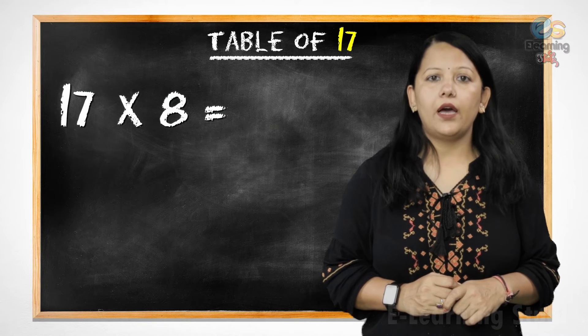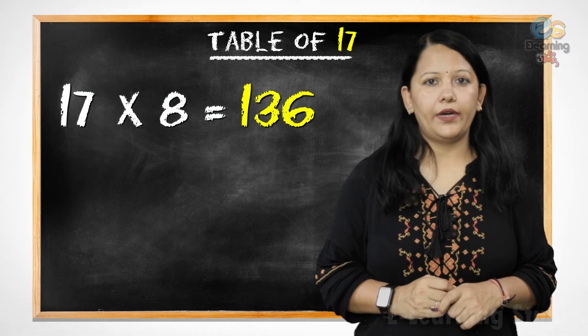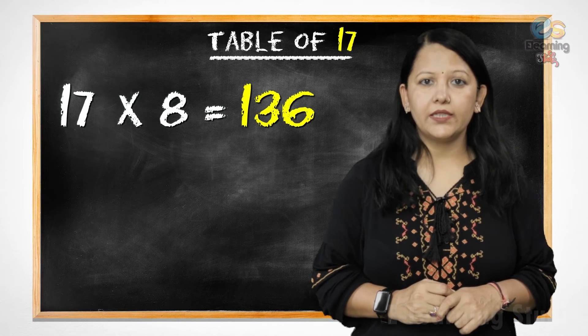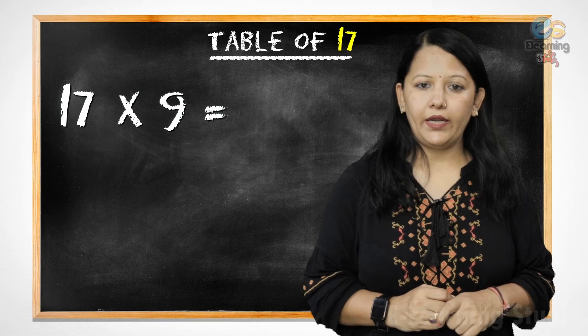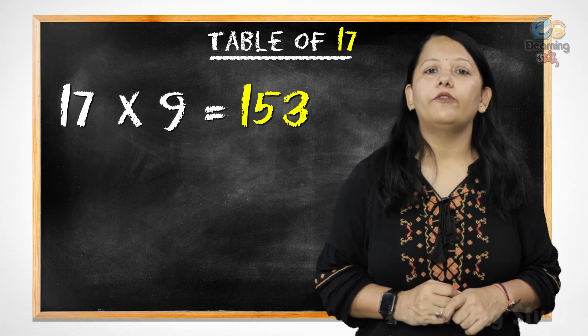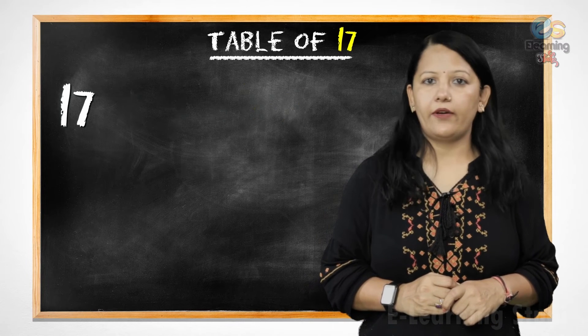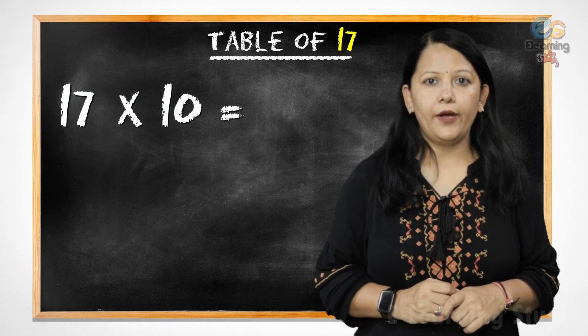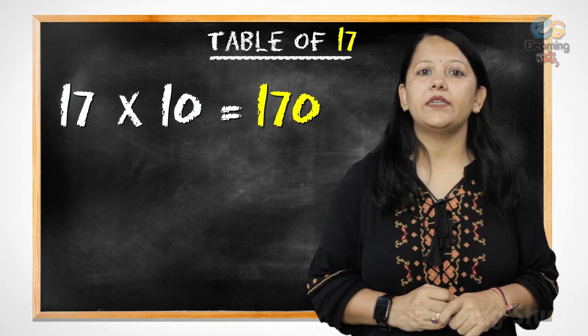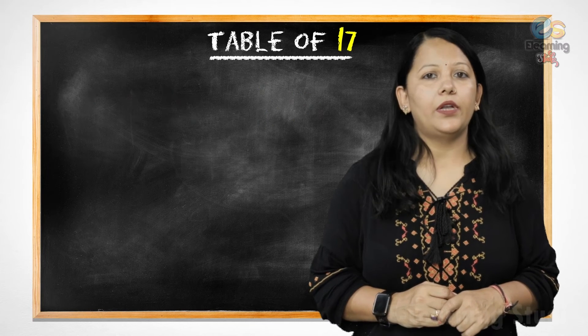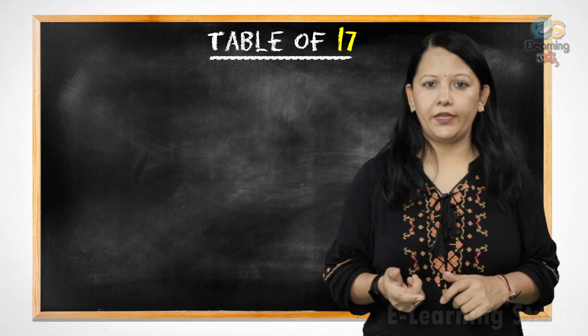17 sevens are 119, 17 eights are 136, 17 nines are 153, 17 tens are 117. Now let's revise it.